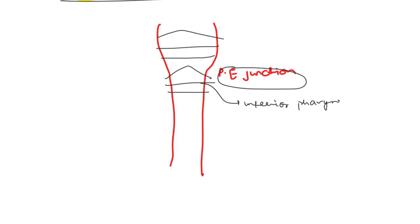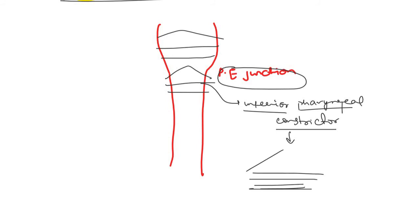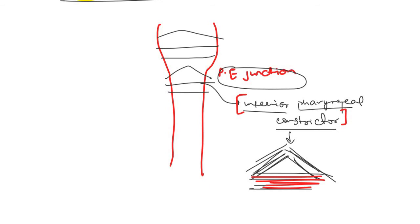The inferior pharyngeal constrictor has two parts: the cricopharyngeus part, which is entirely transverse in orientation, and the thyropharyngeus part. Because of this difference in muscle fiber orientation, there is a partial gap between these two parts known as Killian's dehiscence.